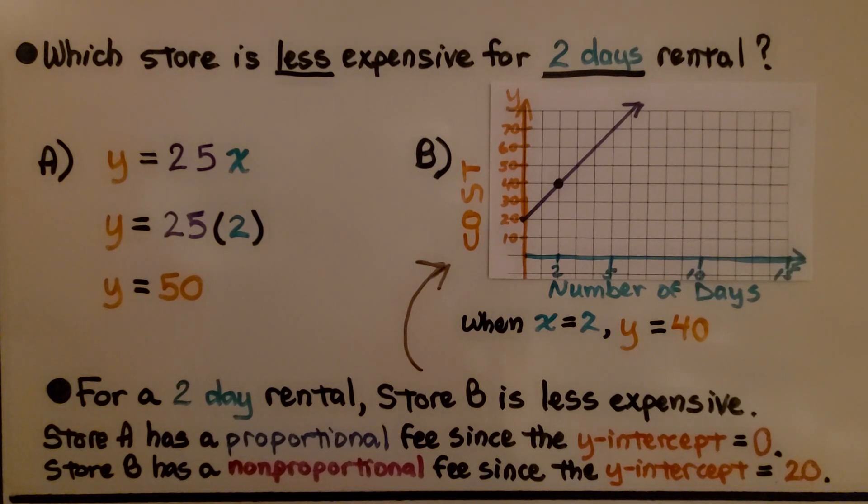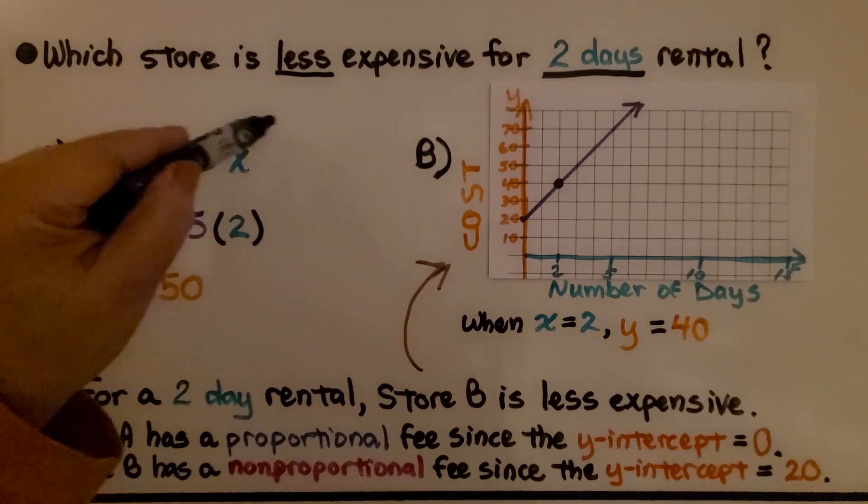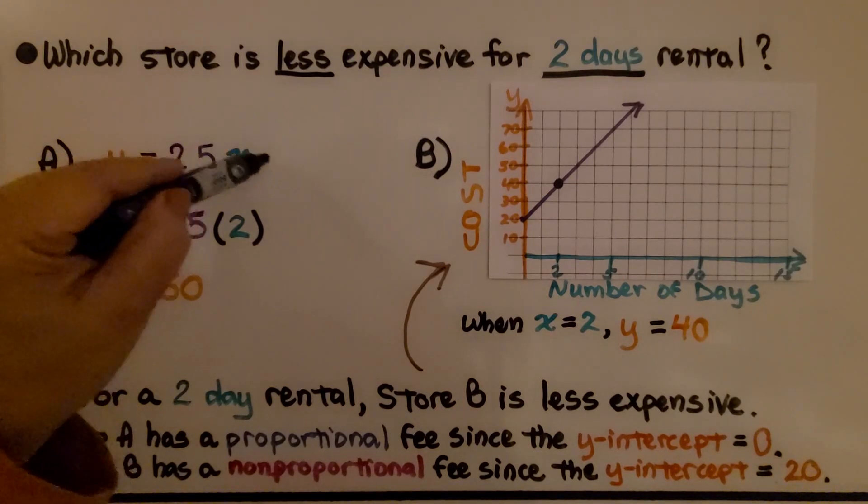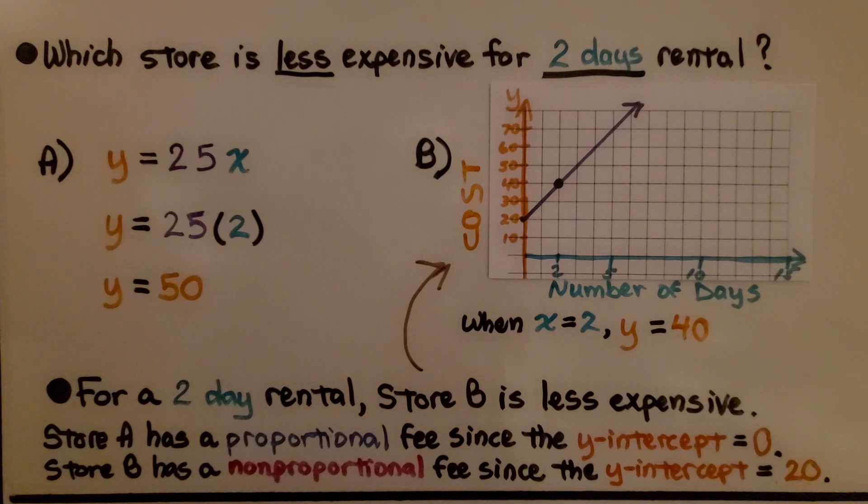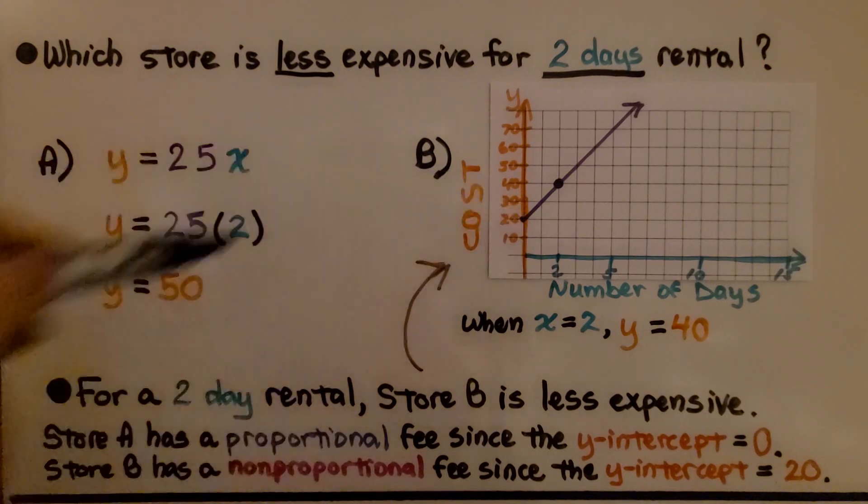Store A has a proportional fee since the y-intercept is zero. We have nothing here for a plus b, so that means it's zero, so it's proportional. And store B has a non-proportional fee since the y-intercept is 20.